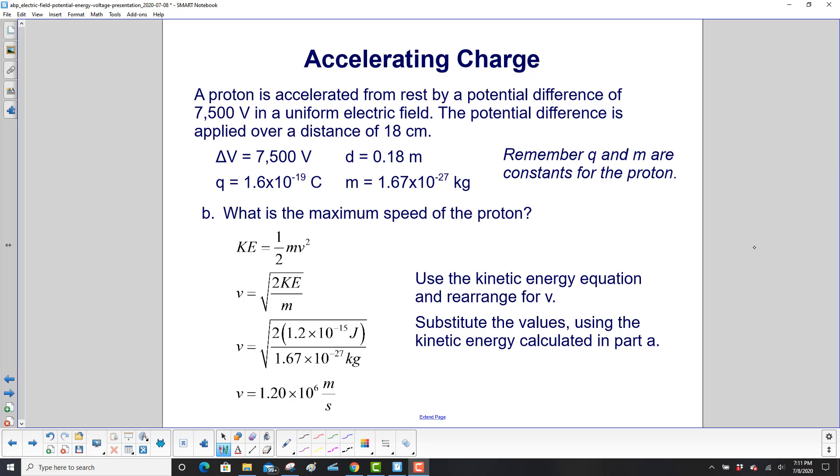What's the maximum speed of the proton? Well, we already found its kinetic energy, which is 1/2 mv squared. We solve that for V, multiply through by 2 over m on both sides.